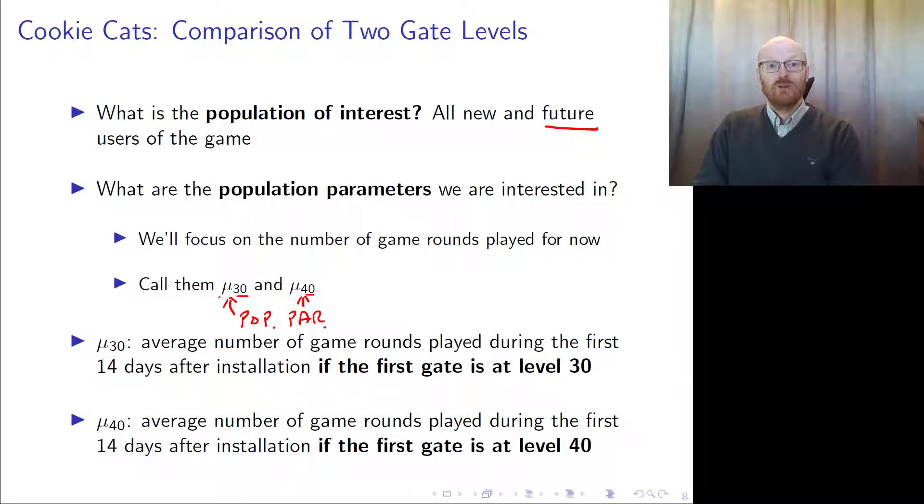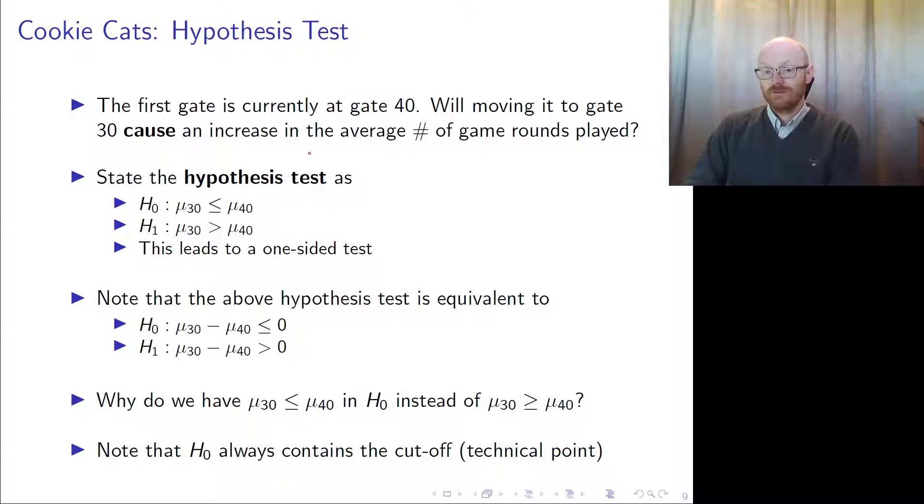What we have to do is first state a hypothesis. The first gate is currently at gate 40—that's the status quo. Will moving it to gate 30 cause an increase in the average number of game rounds played? We are interested in the cause—are we going to change or not?